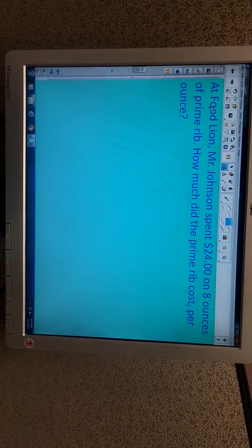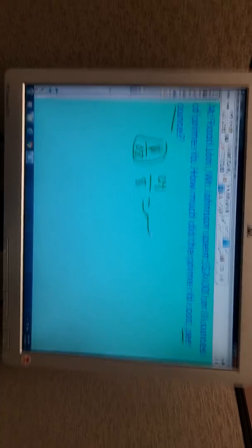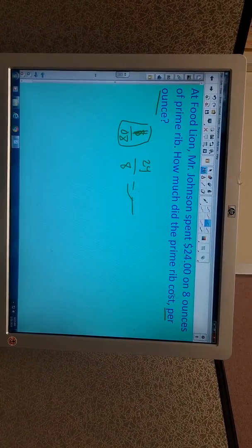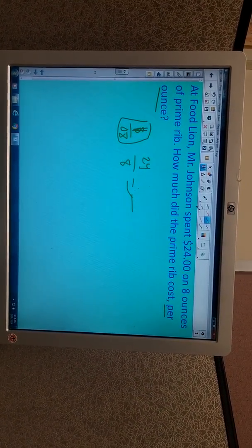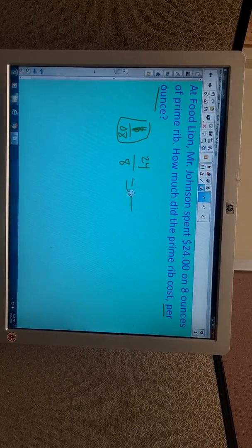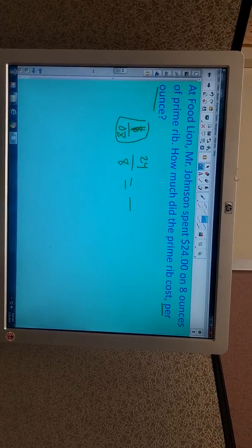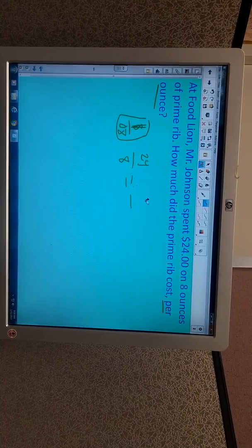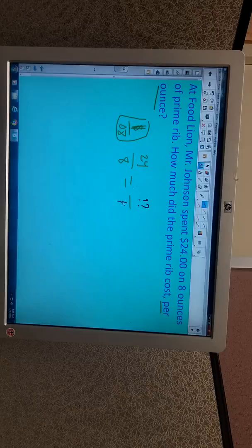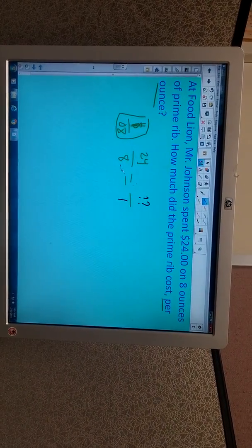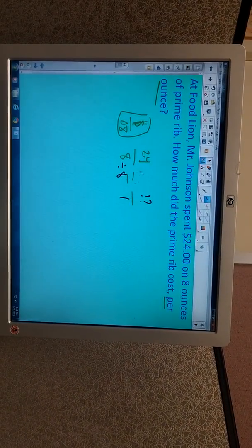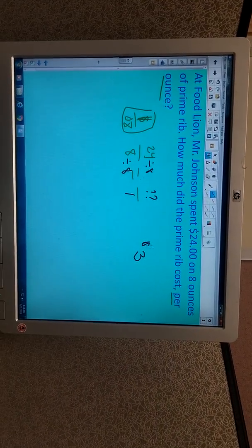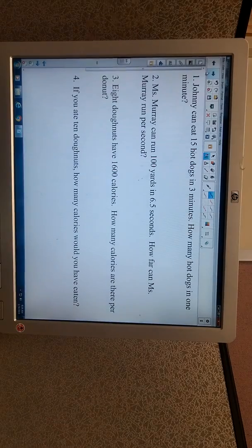Okay, go ahead and pause the tape and try this one. Okay, so here's the ticket. We're comparing the amount of money per ounces and it costs $24 for 8 ounces of prime rib. The only other piece of information we have in this problem is that we want to know how much it costs per ounce. 8 divided by 8 is 1, 24 divided by 8 is 3, so this prime rib costs $3 per ounce.